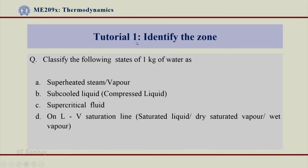The first tutorial is 'Identify the Zone.' The question is: classify the following states of 1 kg of water as superheated steam vapor, subcooled liquid, supercritical fluid, on the LV saturation line (saturated liquid), dry saturated vapor, or wet vapor.